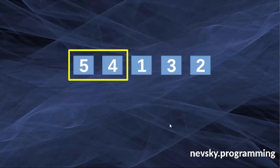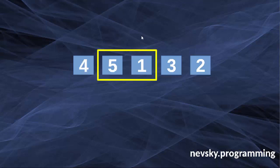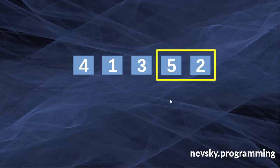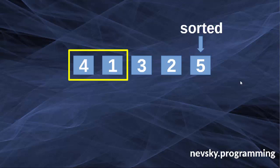Let's see how the bubble sort algorithm works. First we're going to compare numbers 5 and 4. Number 5 is greater than number 4 so we're going to swap them. Then we're going to compare number 5 with number 1 — again number 5 is greater so we swap them. Then we compare numbers 5 and 3, they are in the wrong order so we swap them, and finally we compare numbers 5 and 2 and swap them. That's the finish of round 1.